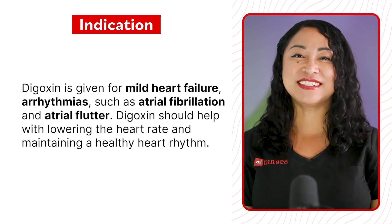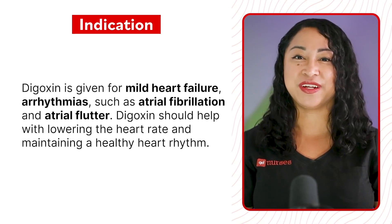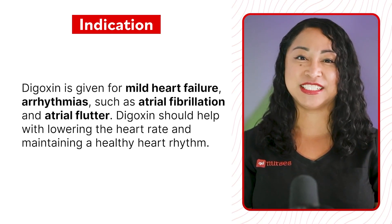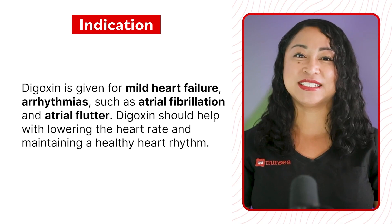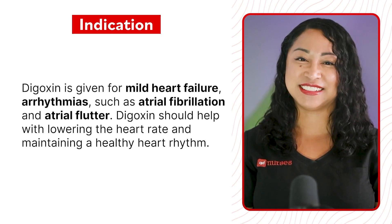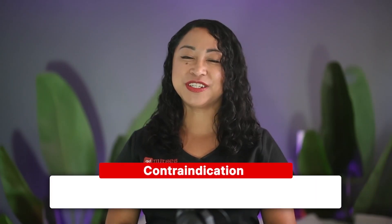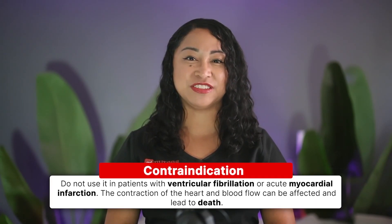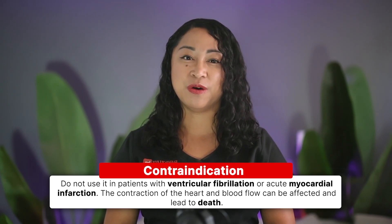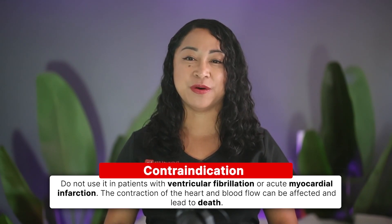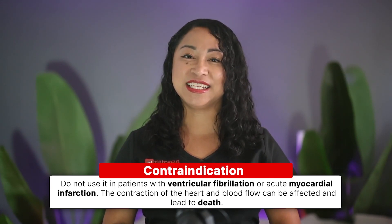Indication: Digoxin is given for mild heart failure and arrhythmias such as atrial fibrillation and atrial flutter. Digoxin should help with lowering the heart rate and maintaining a healthy heart rhythm. Contraindication: Do not use it in patients with ventricular fibrillation or acute myocardial infarction, as the contraction of the heart and blood flow can be affected and lead to death.